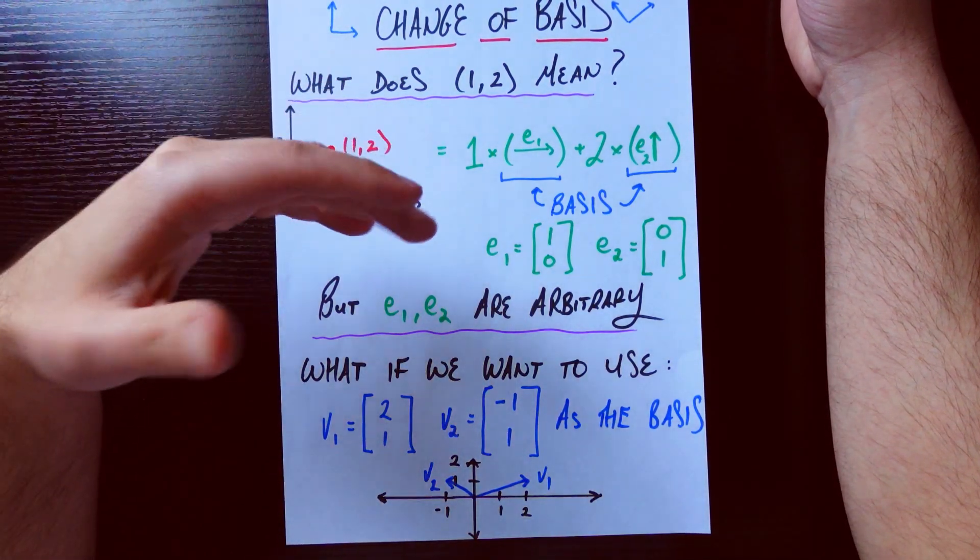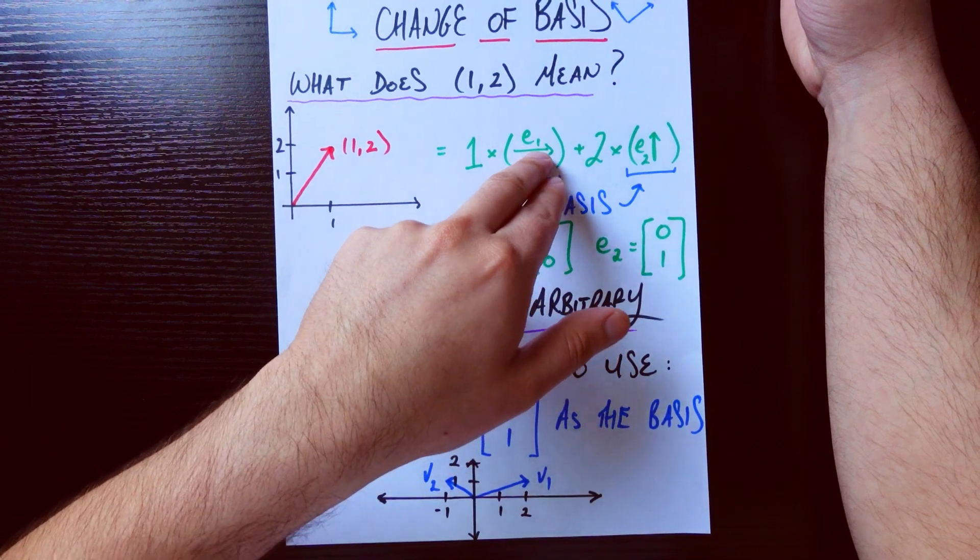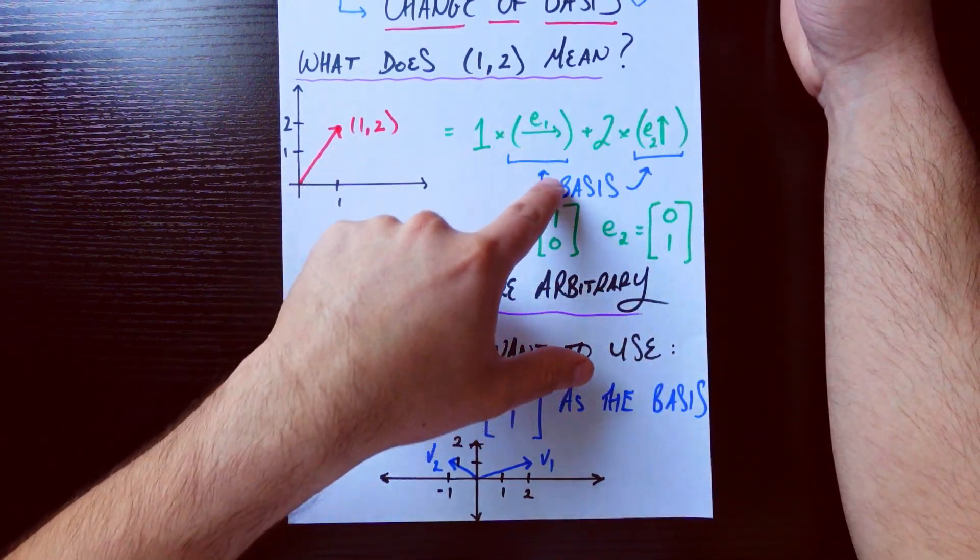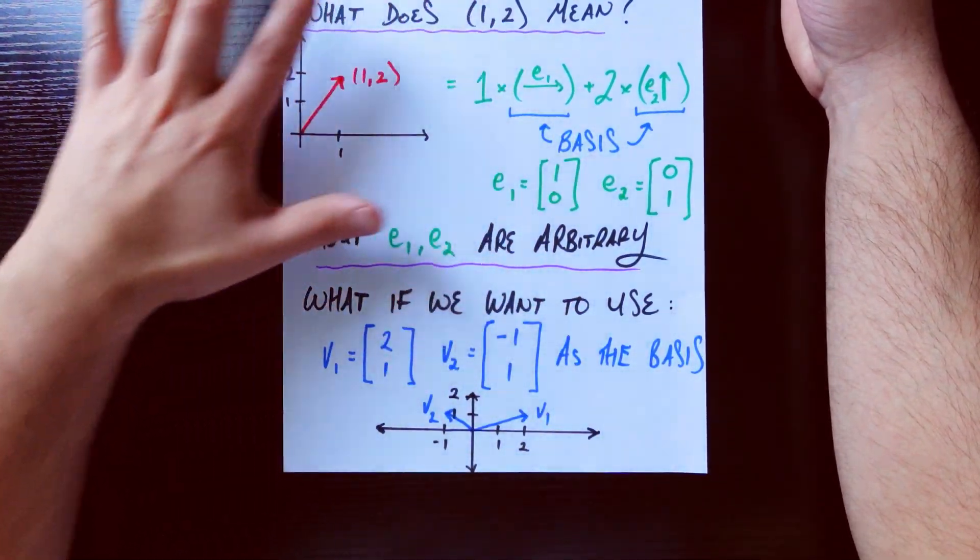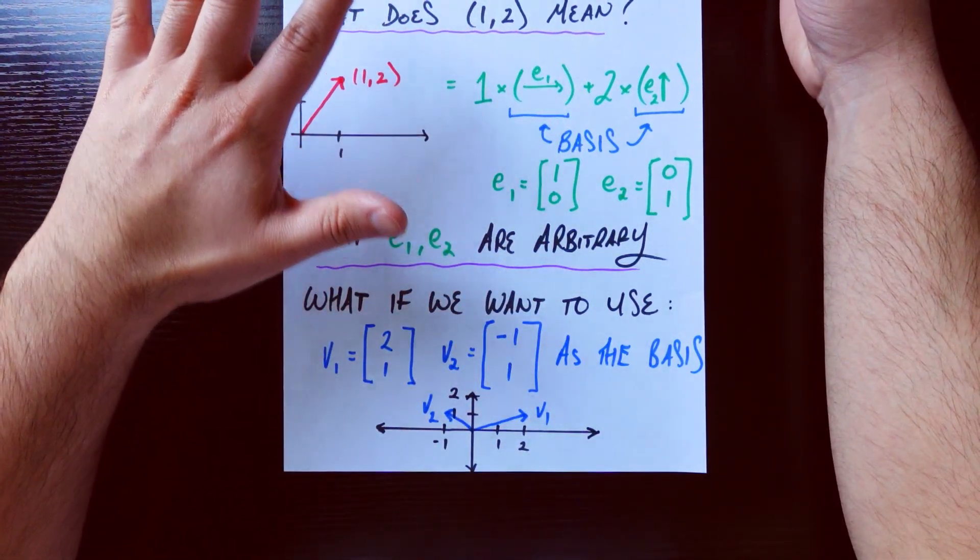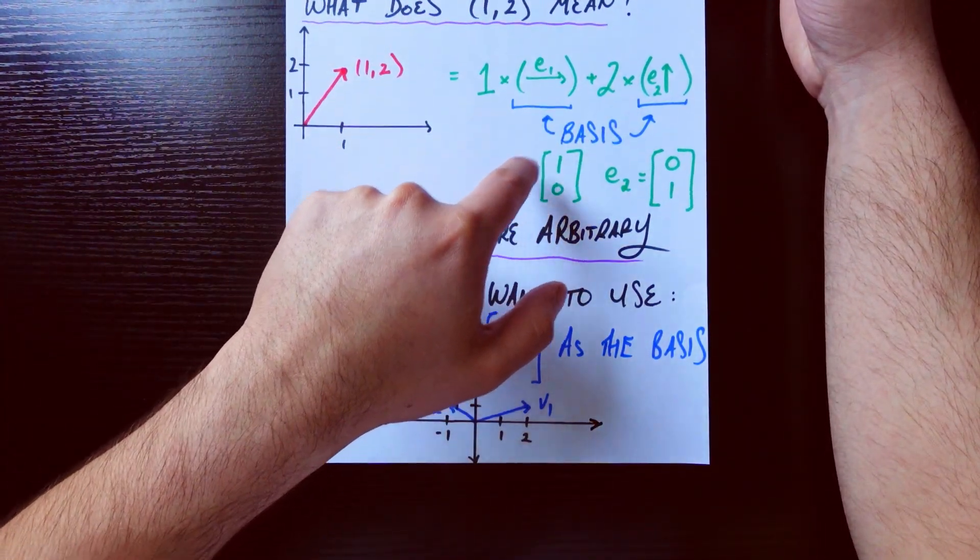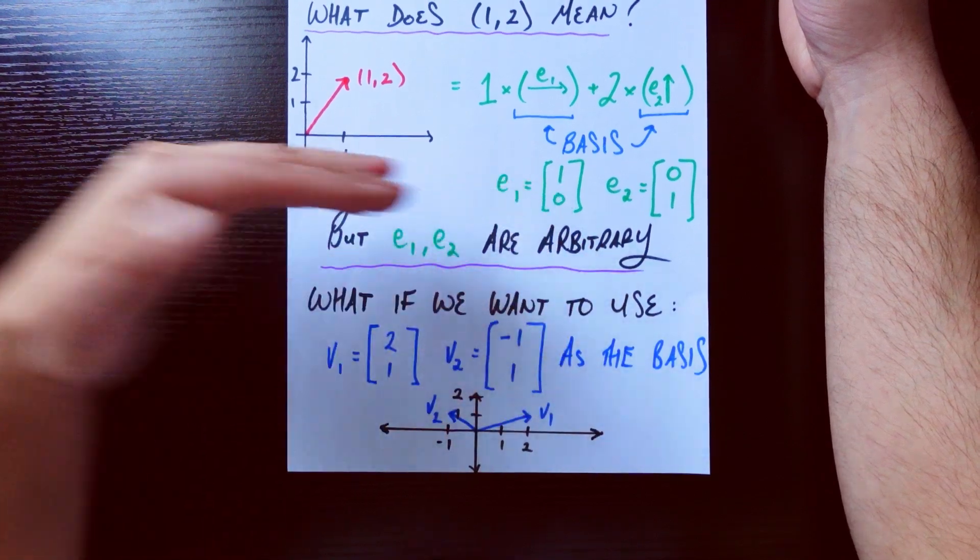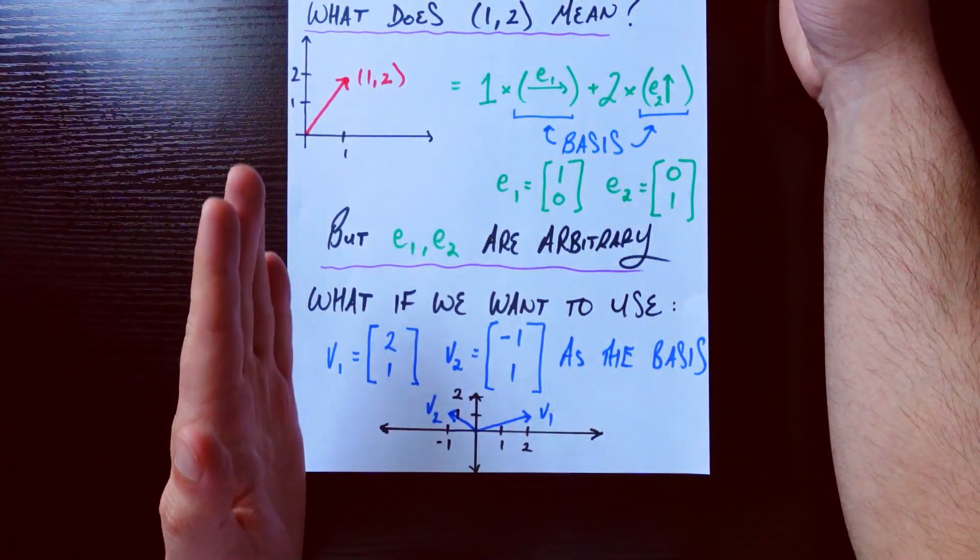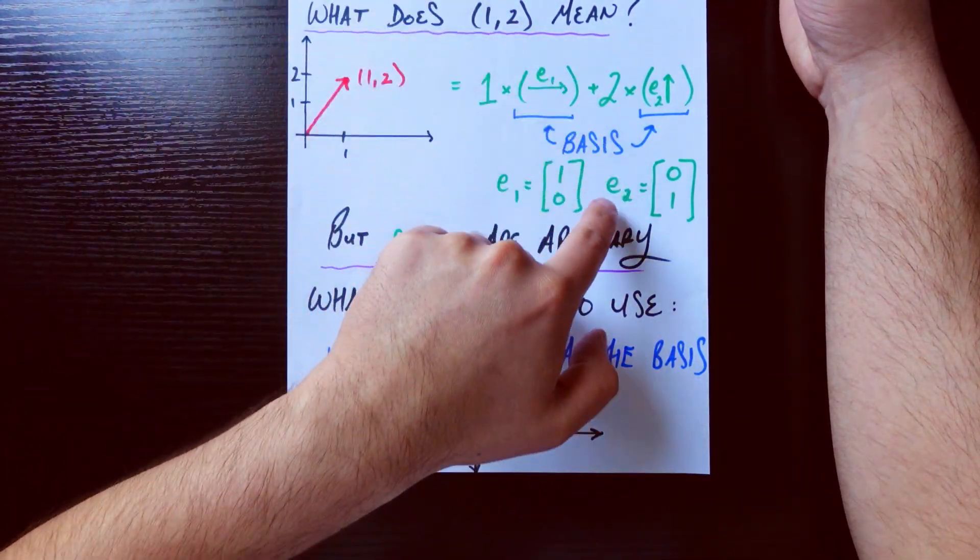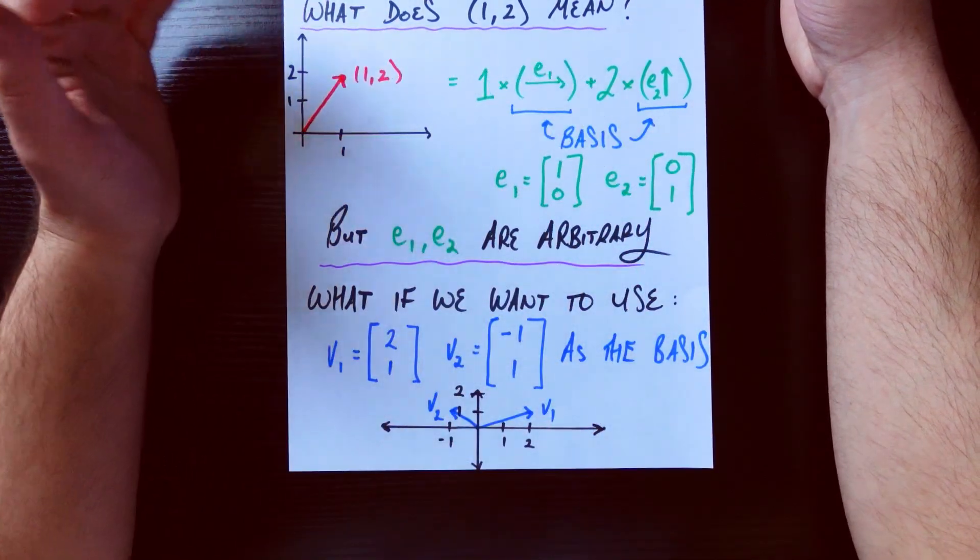Now, to drop the name basis for the first time, these vectors e1 and e2 form a basis for this space, this R2 space. And e1 specifically is going to be [1,0], because it's 1 unit in the x direction and 0 units in the y direction by definition, and e2 is going to be [0,1] for similar reasons.